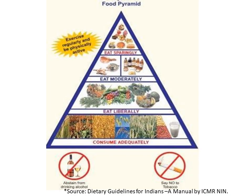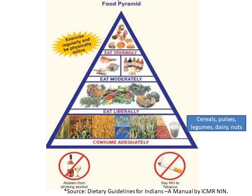The shape of the pyramid conveys which foods should be given more importance per day. Foods shown at the base are to be included in large amounts and form the base of a well-balanced diet — it says 'eat adequately.' It suggests that cereals, pulses and dairy are high in proteins, carbohydrates, vitamins, minerals and fiber.